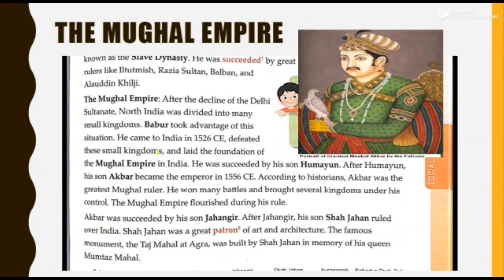Now let's talk about the Mughal Empire. The Delhi Sultanate had weakened, and Babur took advantage of this, coming to India and defeating the small kingdoms of the Delhi Sultanate, establishing the Mughal Empire in India. According to historians, Akbar was the greatest Mughal ruler, who fought many battles with many kingdoms.